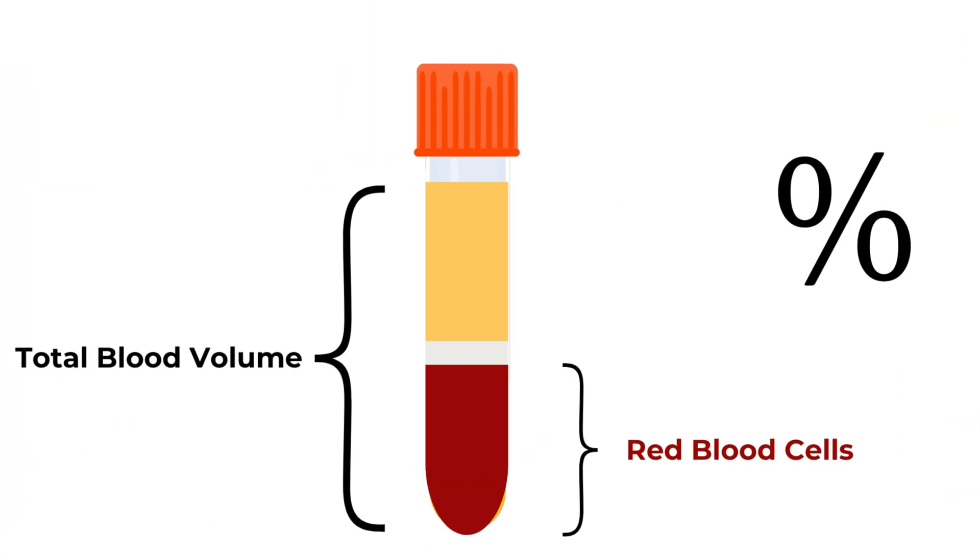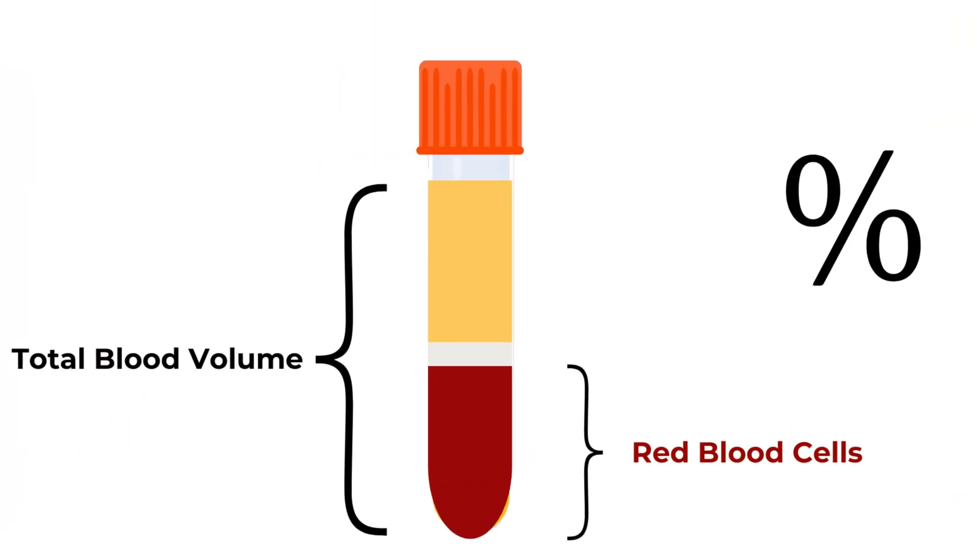Hematocrit is a red blood cell test. Hematocrit tells you how much of the total blood volume red blood cells occupy — it's a percent. Pretend this glass of ice water is blood. The ice is the red blood cells, and the water is everything else. If I spun this glass down in a centrifuge, the ice would pack in tight to the bottom of the glass. That's hematocrit. It's also known as packed red blood cells.